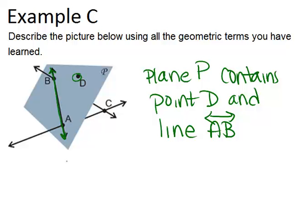And then besides that, we also have these other lines, line BC and AC, which intersect the plane and pass through it. So we could say that as a second part. So lines BC and AC pass through the plane.